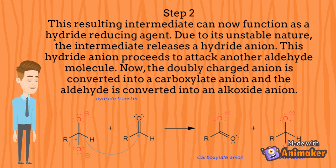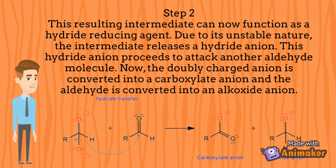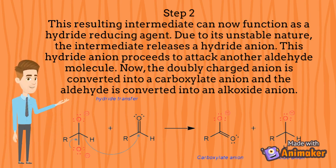Step Number 2: This resulting intermediate can now function as a hydride reducing agent. Due to its unstable nature, the intermediate releases a hydride anion. This hydride anion proceeds to attack another aldehyde molecule. The doubly charged anion is converted into a carboxylate anion and the aldehyde is converted into an alkoxide anion.